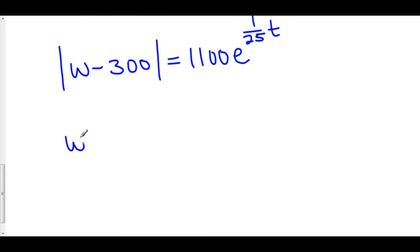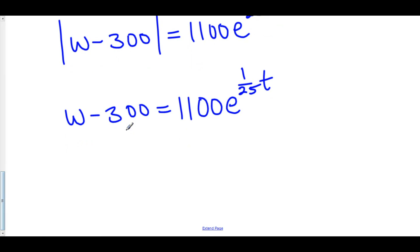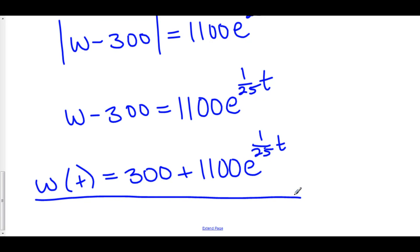So here we have w minus 300 equals 1100e^(1/25t). We can solve for w by adding 300 to both sides, yielding the particular solution to this differential equation: w(t) equals 300 plus 1100e^(1/25t). That right there is the particular solution to this differential equation.